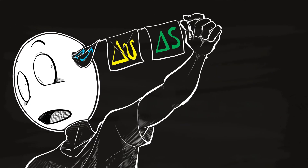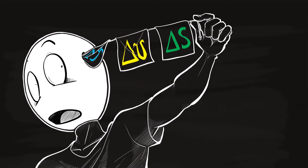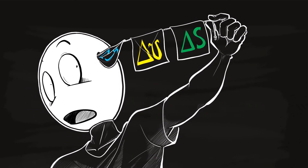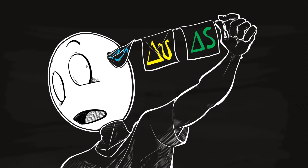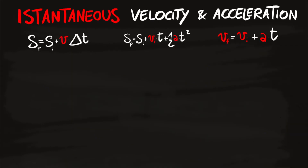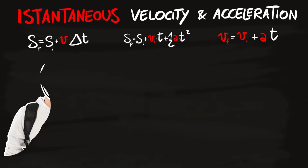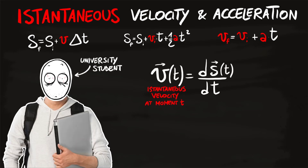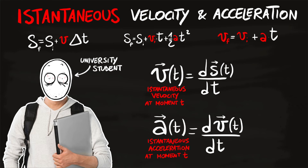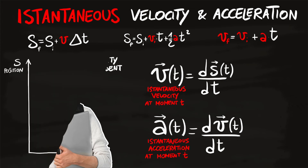Get Δs, Δt, and Δv out of your mind — the delta quantities are only for averages. Instantaneous quantities are what you find in laws of motion, and there are a couple of ways to obtain them. The first method, for more experienced students: instantaneous velocity is the derivative with respect to time of the position law of motion, and instantaneous acceleration is the derivative of the velocity law of motion.